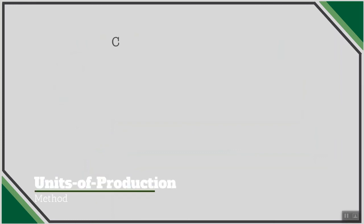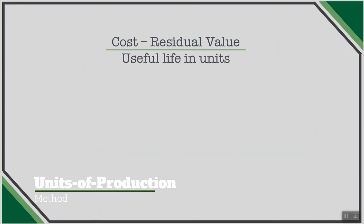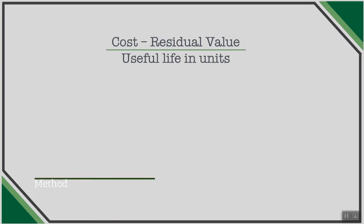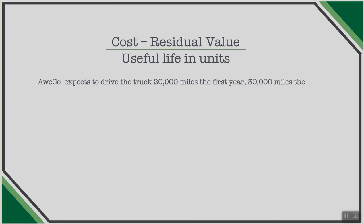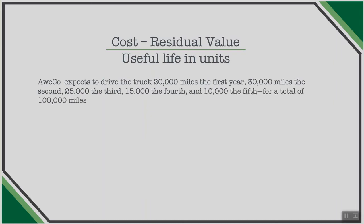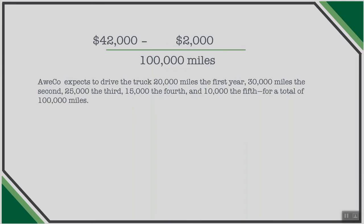The third depreciation method is units of production. Under units of production, we take the cost of the asset less residual value and divide by the estimated useful life measured in units rather than years — determined by what the company expects to get from the asset. Using our truck example, ACO expects to drive 20,000 miles in year one, 30,000 in year two, 25,000 in year three, 15,000 in year four, and 10,000 in year five — totaling 100,000 miles. The cost of $42,000 less $2,000 residual value divided by 100,000 miles gives 40 cents per mile of depreciation.